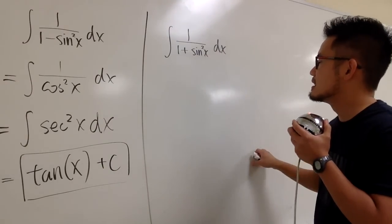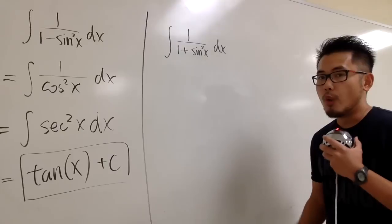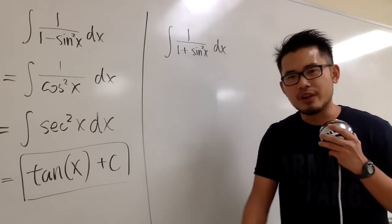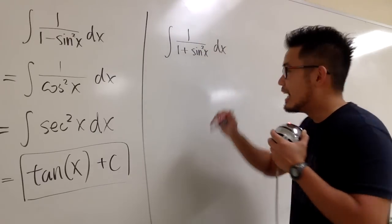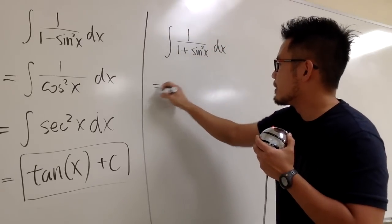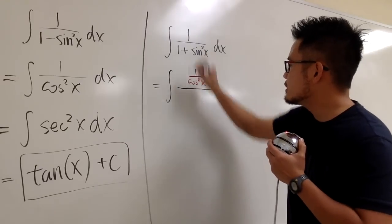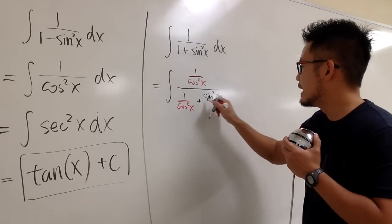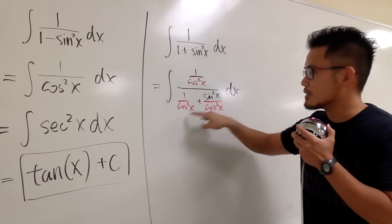If you think about the derivative of sine squared x, you get 2 sine x times cosine x, but there's nothing on top to play along with it. So why don't we produce more things? The secret to this question is that we are going to divide by something positive on the bottom. The best friend of sine is cosine, so instead of multiplying top and bottom by cosine x, we're going to divide everything by cosine squared x.